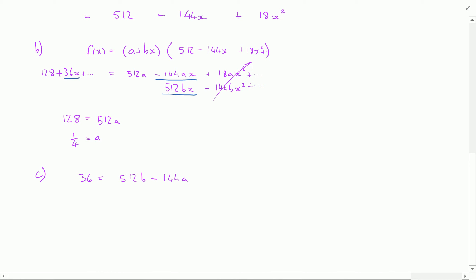Well I've just worked out that a is a quarter. So this is 36 is equal to 512b minus a quarter of 144 which is 36. Rearranging that I get 72 is equal to 512b. And dividing and simplifying I end up here with 9 over 64 is equal to b. So there's my b value, there's my a value. Happy days.